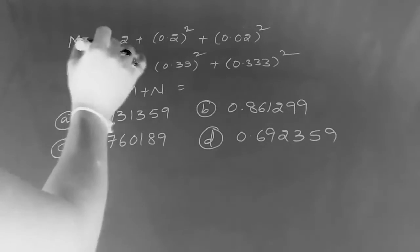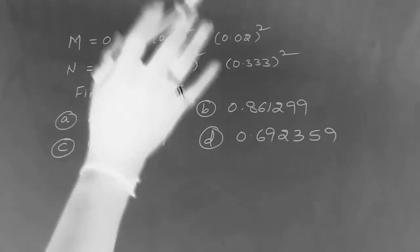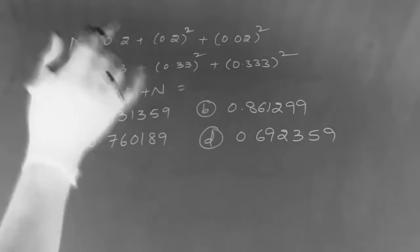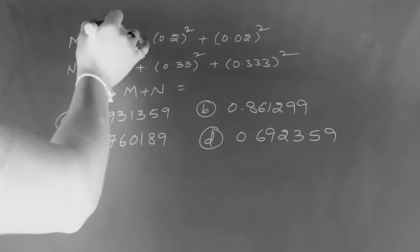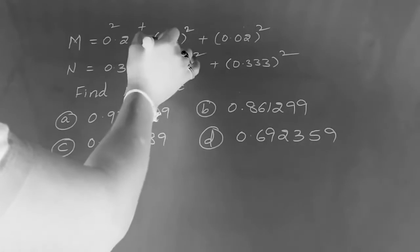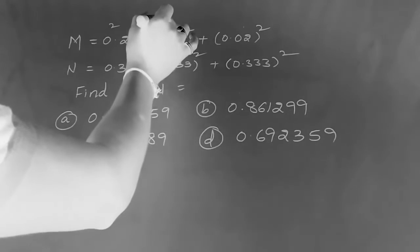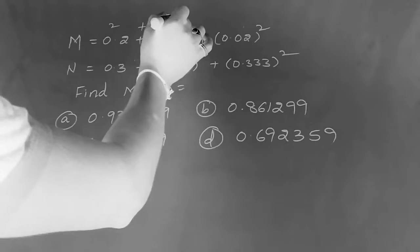We will change the points to decimal and decimal. We will change the number of digits. Here is 0, 2. 0 plus 2 is nothing but 2. Here is 0 plus 2 is nothing but 2. That is square.